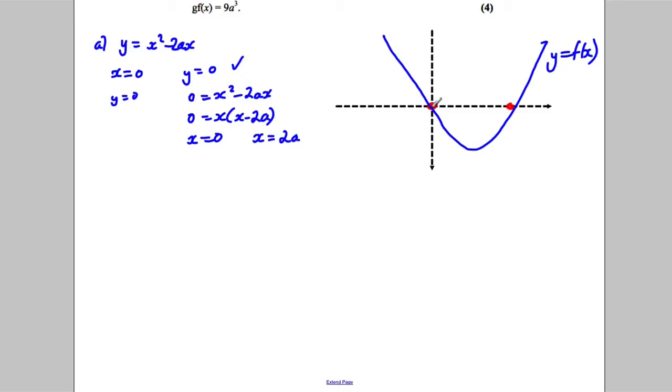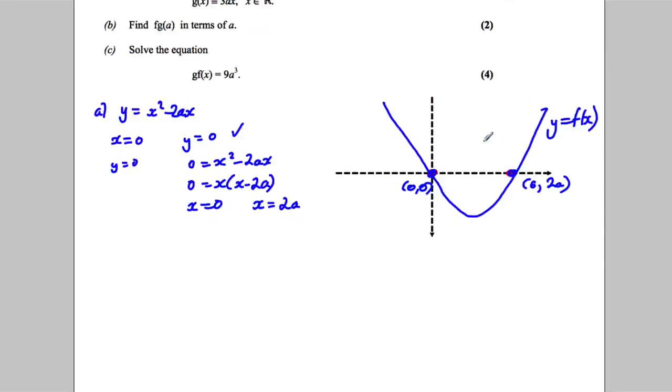So now we're asked, and these points here are (0,0), this point here is (2a,0). We're not actually asked for the maximum or minimum at all.